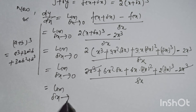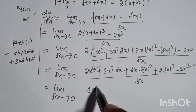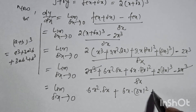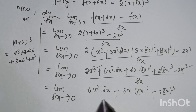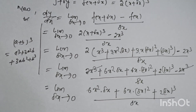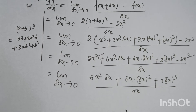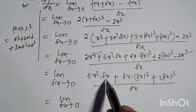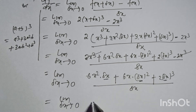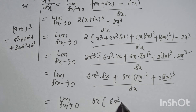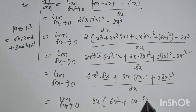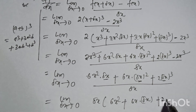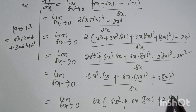The 2x³ terms cancel, leaving: limit as delta-x tends to 0 of [6x²·delta-x + 6x·(delta-x)² + 2·(delta-x)³] divided by delta-x. Taking delta-x common from the numerator gives: 6x² + 6x·delta-x + 2·(delta-x)².